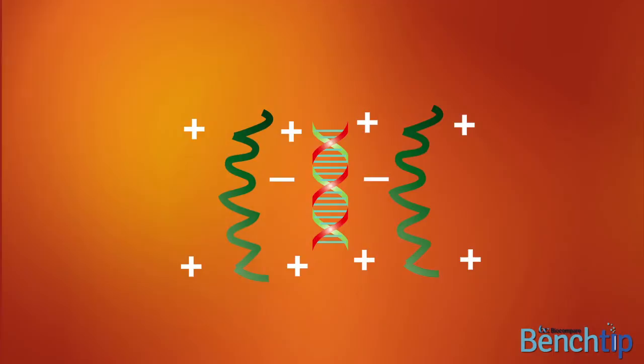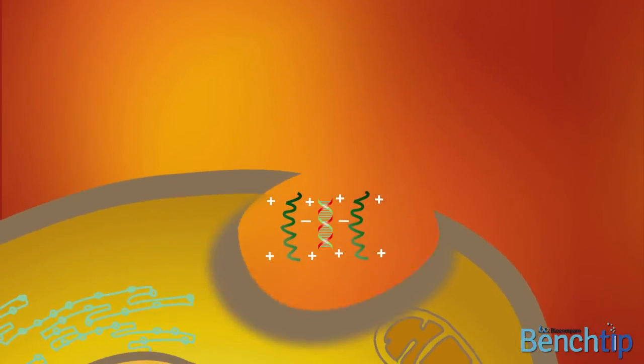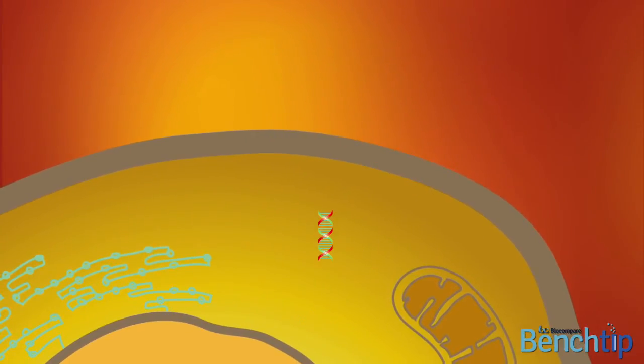This allows these transfection complexes to be taken up very efficiently via endocytosis and delivered to their respective functional locations, the cytoplasm and the nucleus.